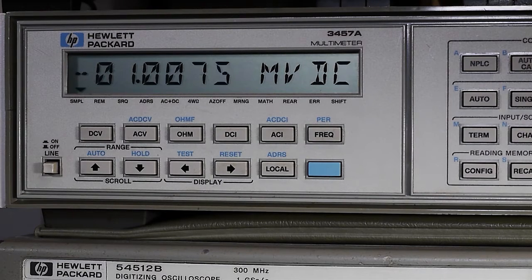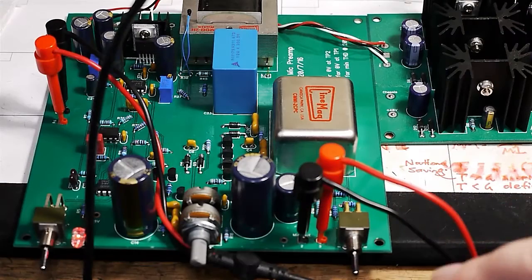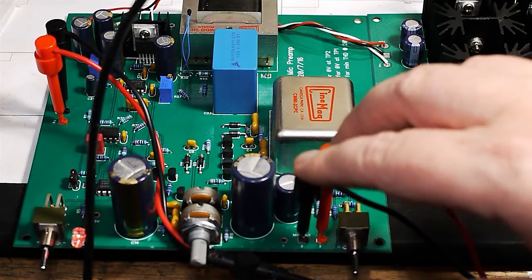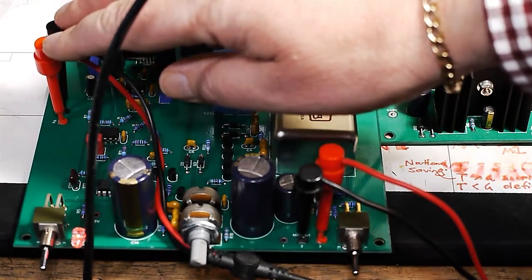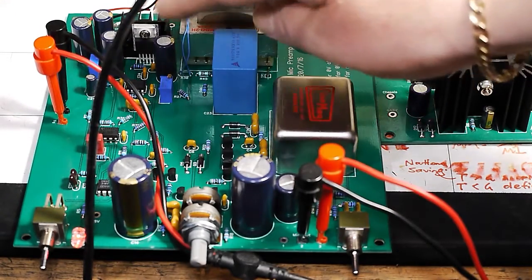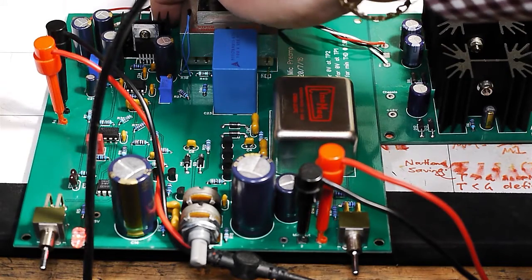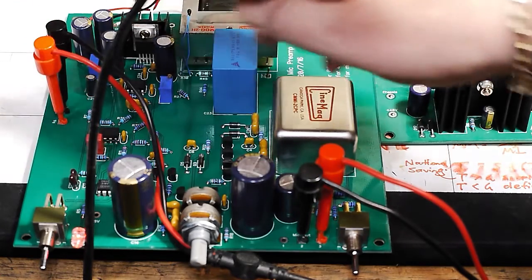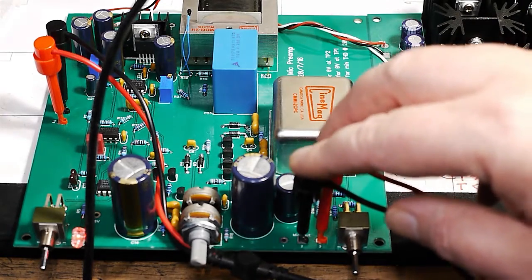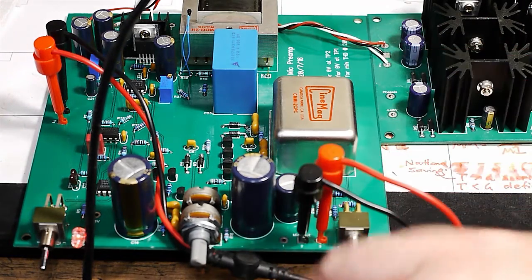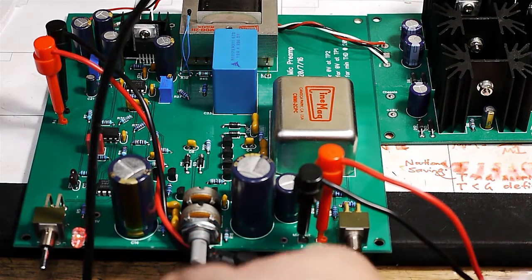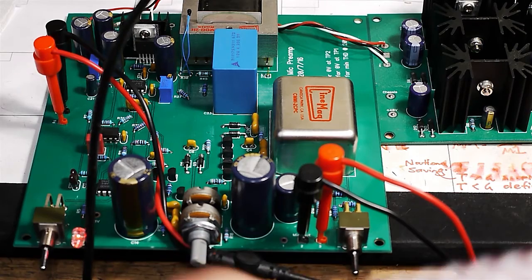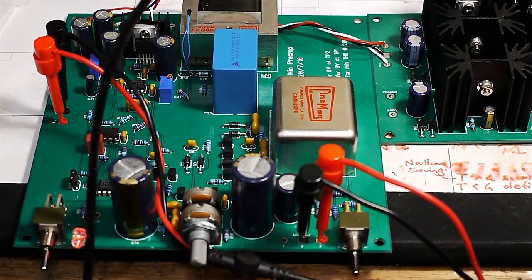Now we're going to press on to applying an input signal and having a look at the output on the scope. Here's the test setup. We're applying a signal to the microphone input here, still picking up the output from the meter outputs. We're applying a one kilohertz sine wave. We have the input pad enabled and the gain set at minimum.